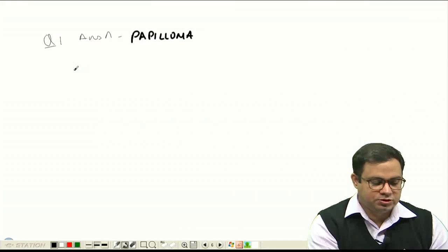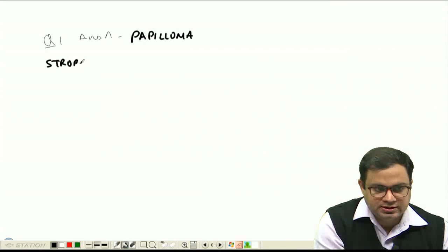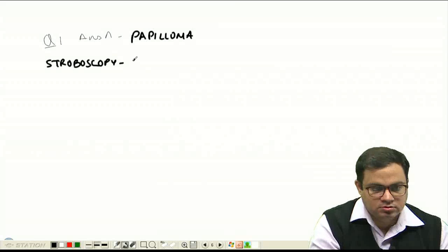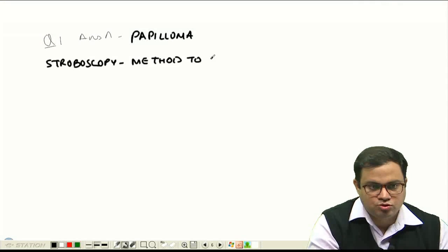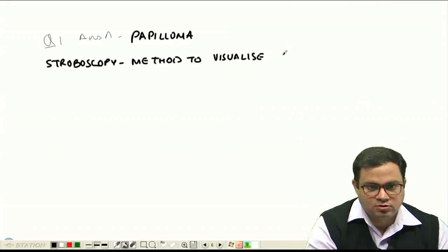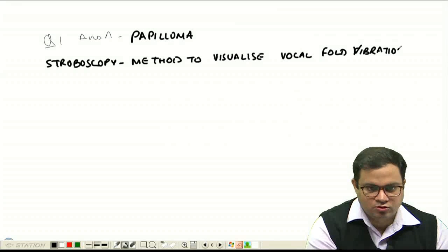know what is video stroboscopy. Video stroboscopy is a method to visualize vocal fold vibrations. So you can ask me, how do you see the vocal